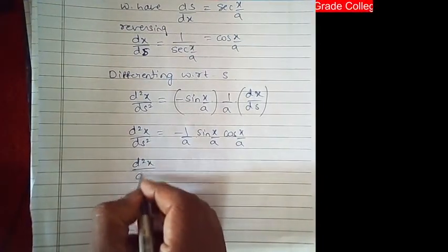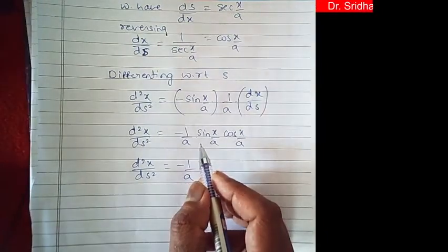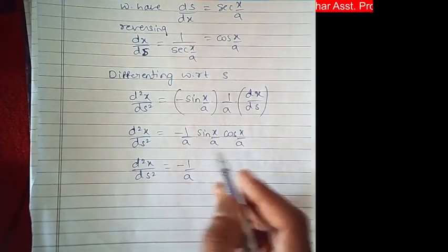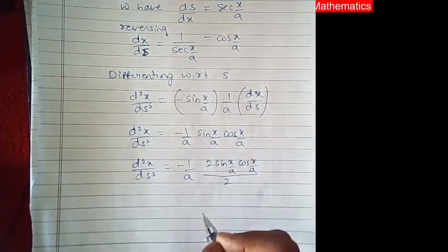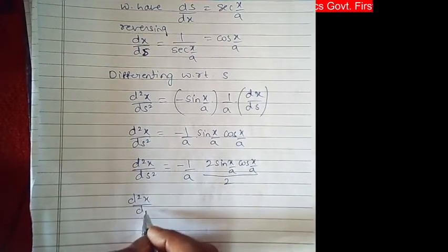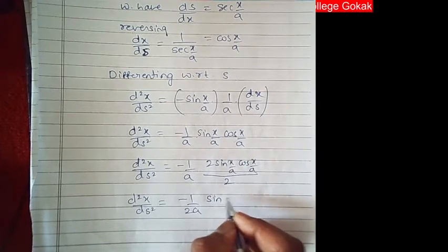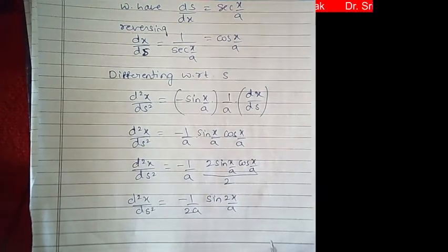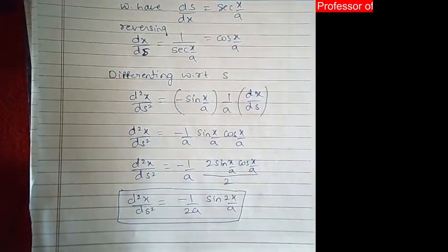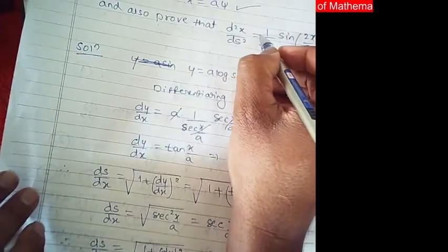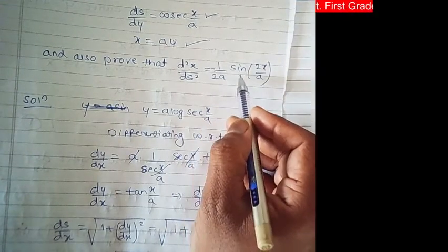So d²x/ds² = −(1/a)·sin(x/a)·cos(x/a). Dividing and multiplying by 2: this gives −(1/2a)·2·sin(x/a)·cos(x/a). Now 2·sin(A)·cos(A) = sin(2A), so d²x/ds² = −(1/2a)·sin(2x/a). This is also solved.